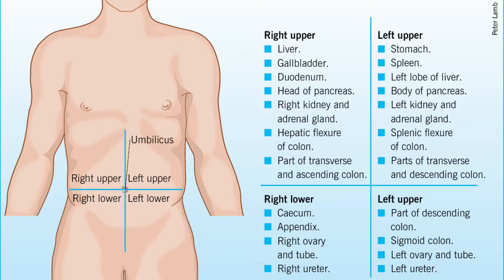Your abdomen is divided into four quadrants at your umbilicus. These four quadrants are labeled as the right upper quadrant, right lower quadrant, left upper quadrant, and left lower quadrant.